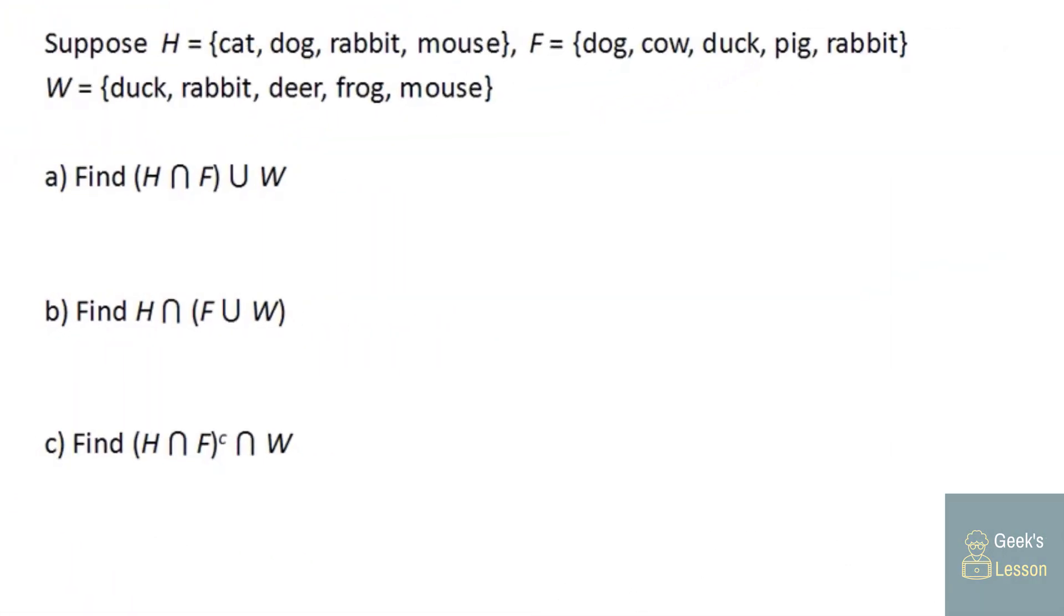So here we have three sets. And we're gonna try to find these unions and intersections. Now, you notice that we're using parentheses here. Our parentheses are being used here as grouping symbols, kind of like with algebra. And the grouping symbols say what you should do first. So here the parentheses tell me that first I need to figure out what the intersection of H and F are. So H and F, the intersection are the elements that are in both sets, which look like dog and rabbit. So now we'll union that with the set W. So we'll need our dog and our rabbit from the H intersect F set. And then we'll need the elements of W, which would include duck. We already have rabbit, so we don't need to list it again. Deer, frog, and mouse.